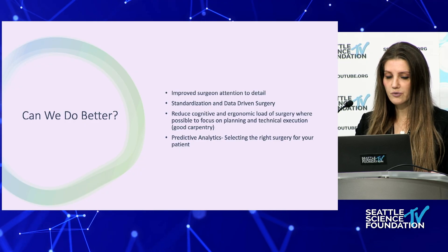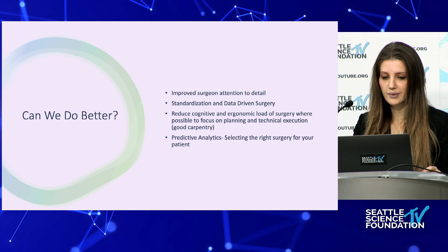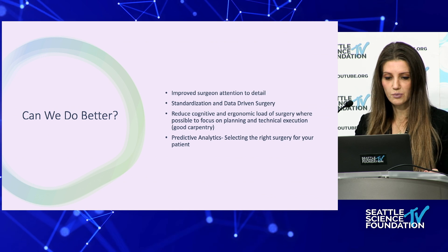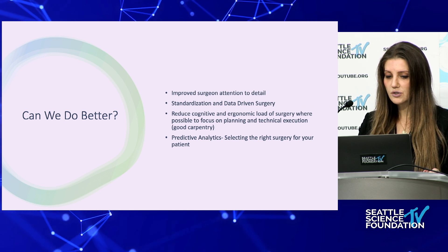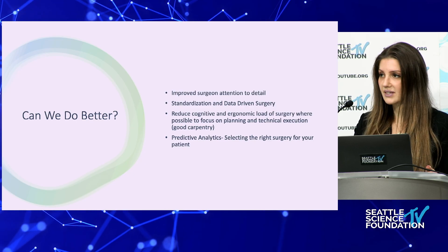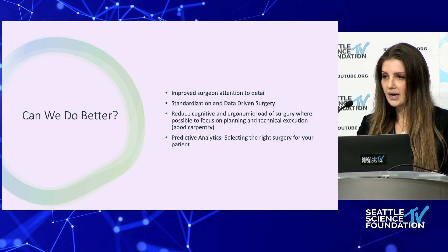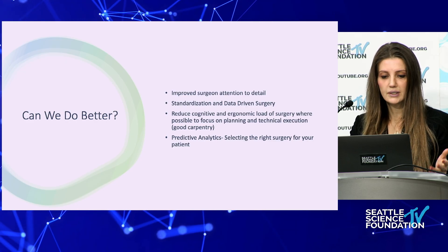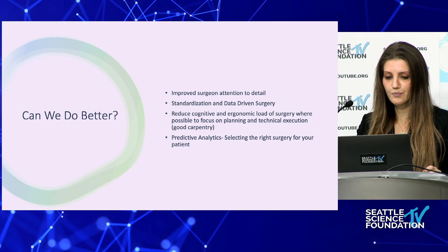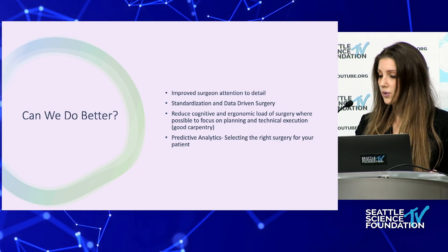Can we do better? Improved attention to detail — if you just do a good job, patients will do better, but that's harder than you think. Standardization and data-driven surgery using robotics and other structured planning platforms reduces the cognitive and ergonomic load of surgery. If you have to instrument T2 to pelvis, that's a lot easier to do properly with a robot than freehand, allowing you to focus more on planning sagittal correction and alignment. Predictive analytics are also going to become more important tools in spine surgery.